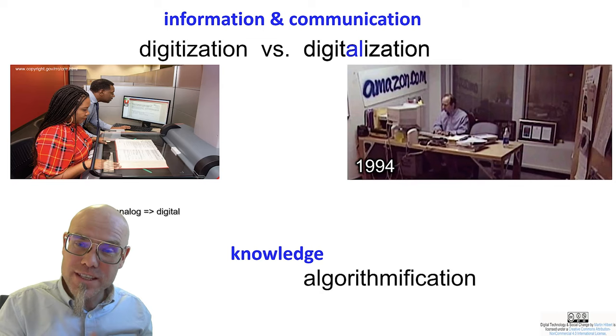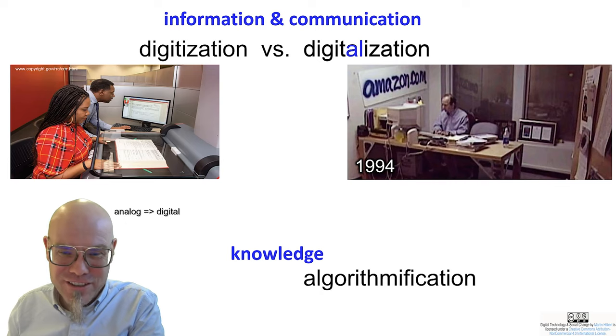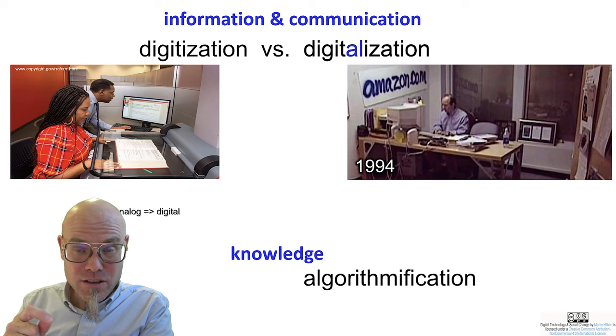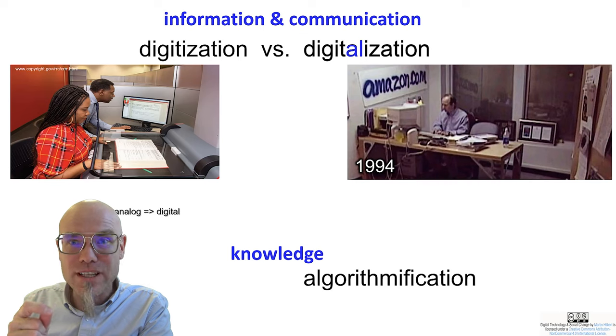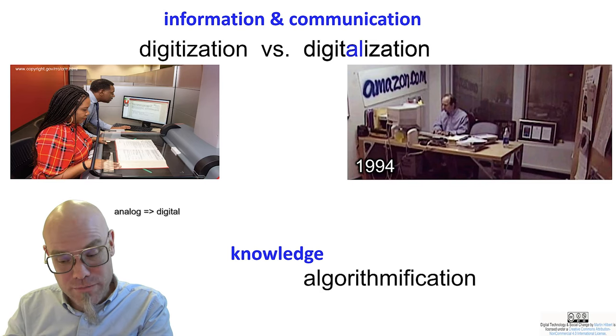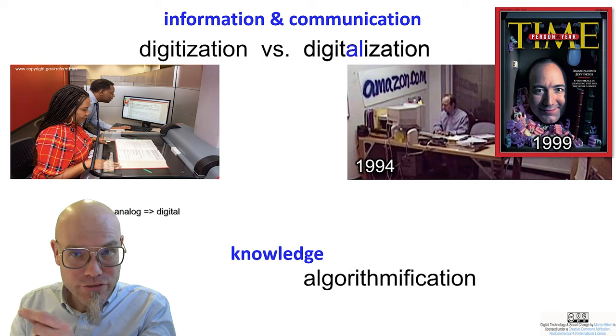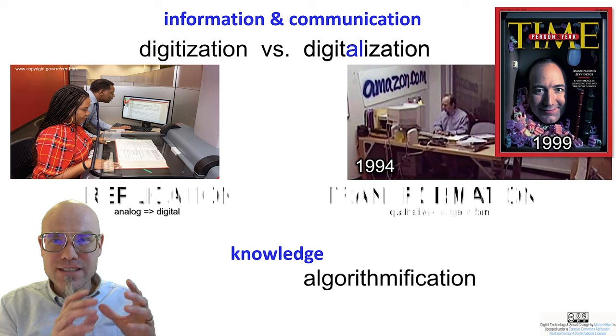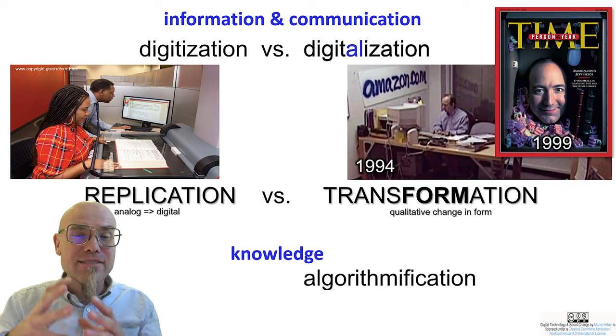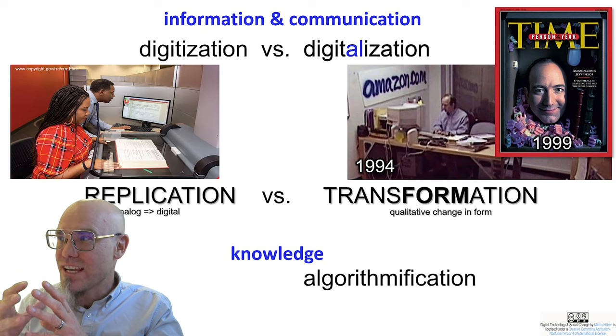Now that's different from digitalization. What this gentleman here did in his little garage, where he wrote amazon.com on the wall, as Jeff Bezos in 1994, he digitalized the book market. Amazon at the beginning was a retailer, a sales platform for books exclusively. He started that in 1994, and only five years later he was already person of the year because he actually transformed the entire industry. So while digitization is the replication, you take the book, convert it to digital format, don't change anything, digitalization is the transformation. It has to do with the form, the form is changing, it's a qualitative change.